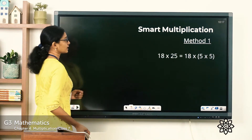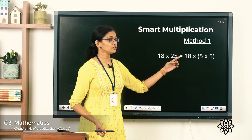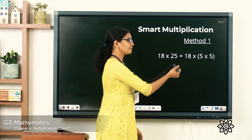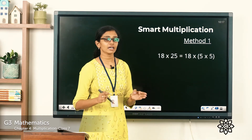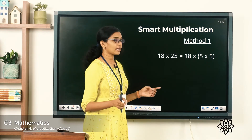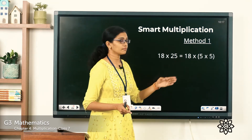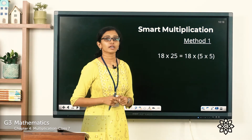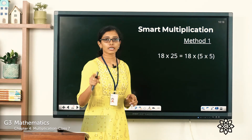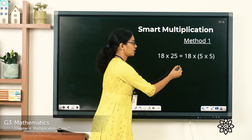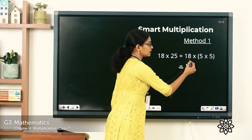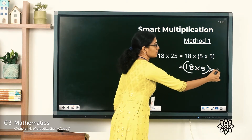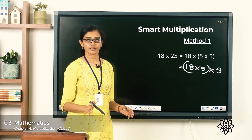So 18 into 25 is equal to 18 into 5 into 5. Now we know it doesn't matter even if we change the way we group the numbers when we multiply — it will not make any difference to the final product. So I'm going to regroup these numbers. I'm going to write 18 into 5, into 5. Clear?